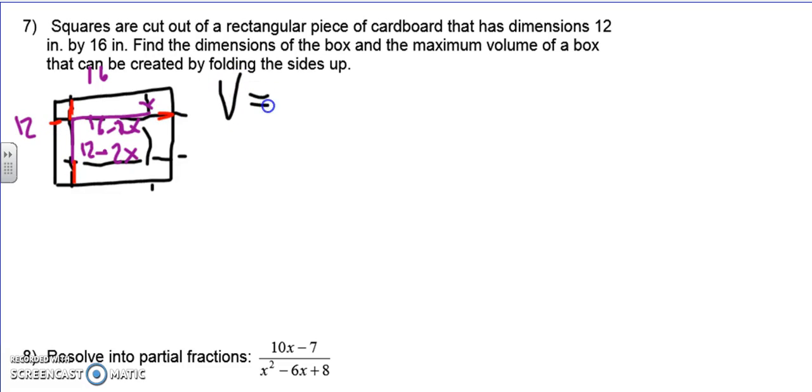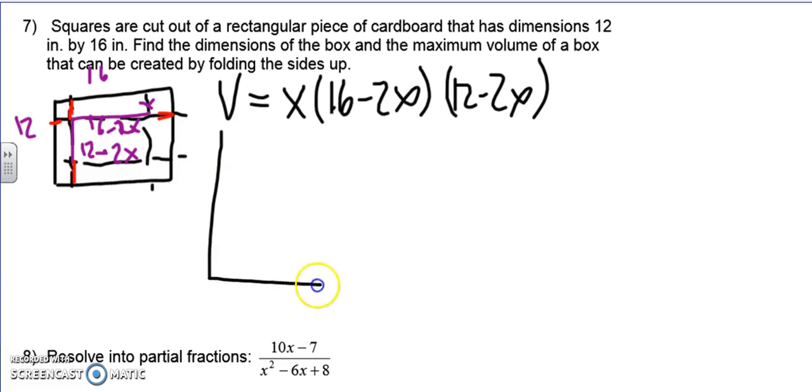So volume, length times width times height. x is my height. 16 minus 2x and 12 minus 2x. Those are my length and my width. All right. So we are going to do a graph. It's going to look like this.